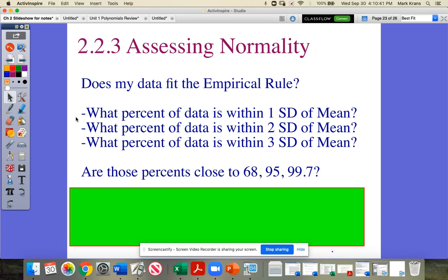The first is, does my data fit the empirical rule? What percentage of data should be within one standard deviation of the mean? 68%. What percent of my data is actually within one standard deviation of the mean? So you get the mean, you get the standard deviation, and you check to the left and right, and you say, how many pieces of data are in that actual range? And if it's close to 68, you're good. And then what percentage of data are within two standard deviations of the mean? It should be 95%. And what percent are within three standard deviations? It should be just about 100.